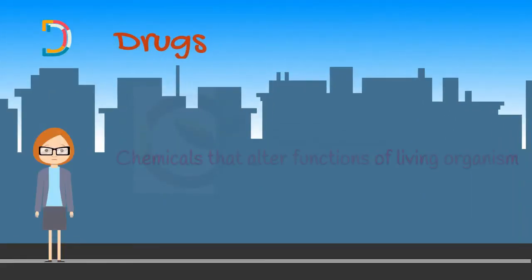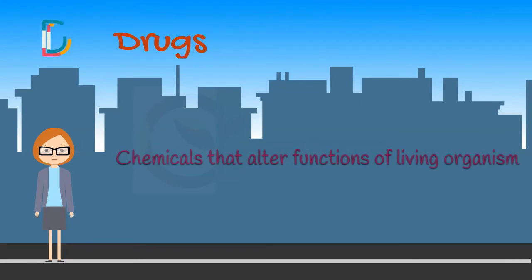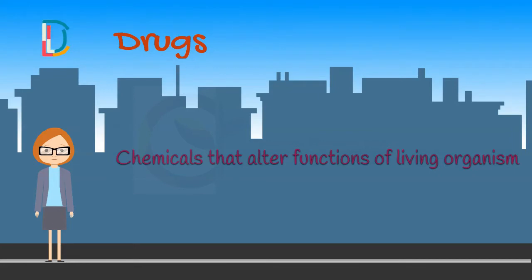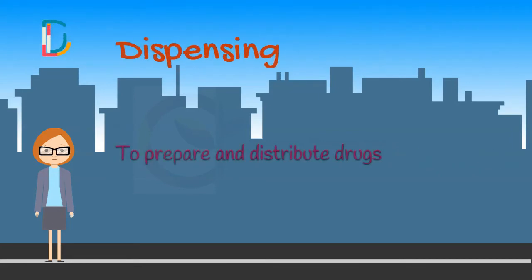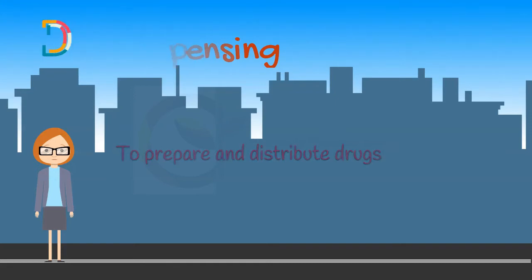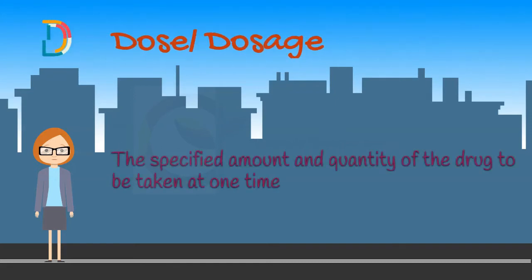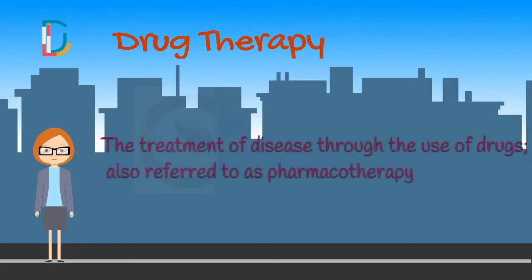Letter D. Drugs — drugs are chemicals that alter functions of living organisms. Drugs are generally given for diagnosis, prevention, control, or cure of disease. Dispensing — to prepare and distribute drugs. Dose or dosage — the specified amount and quantity of the drug to be taken at one time. Drug therapy — the treatment of disease through the use of drugs, also referred to as pharmacotherapy.